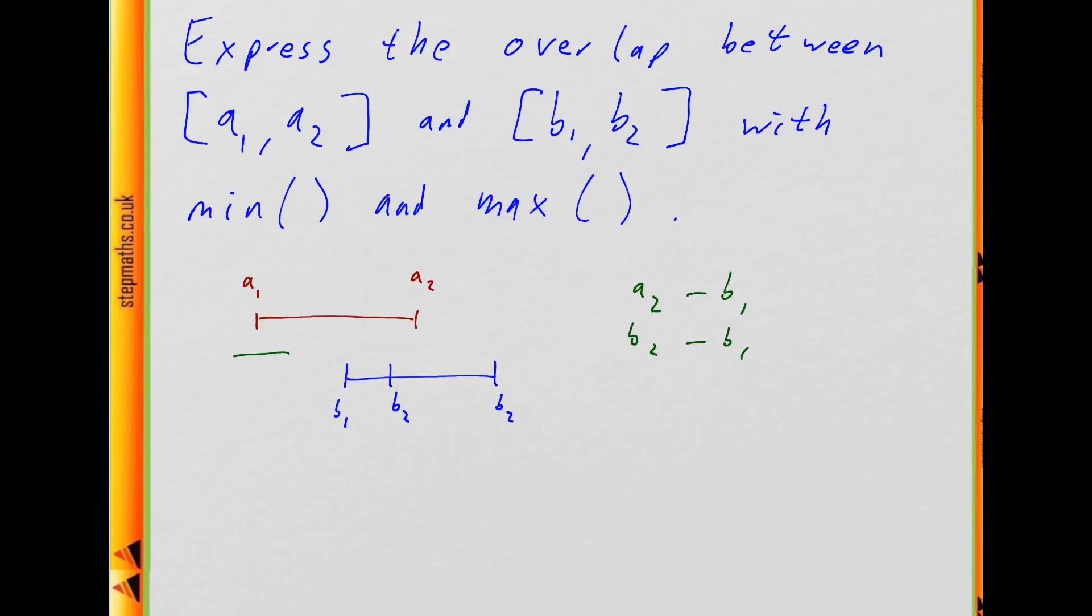The point is whichever of a2 and b2 is further to the left, that's the one I'm going to use. If b2 is further to the left than a2, then the overlap stops here at b2. But if b2 is further to the right, the overlap stops at a2 instead. So the minimum of a2 and b2 is going to be my upper limit.